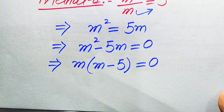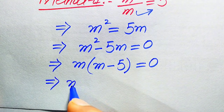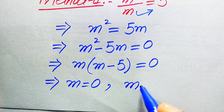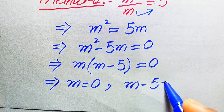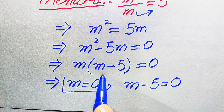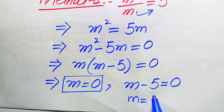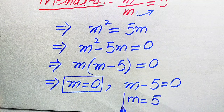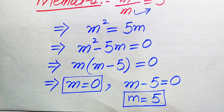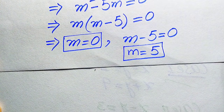Setting each factor to zero gives two cases: m equals 0 is the first root, and from m minus 5 equals 0 we get m equals 5 as the second root.